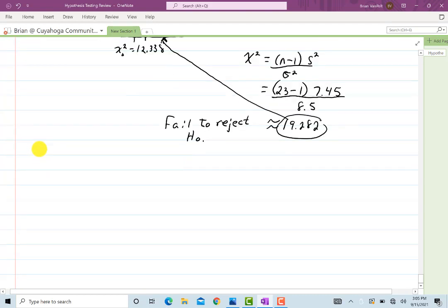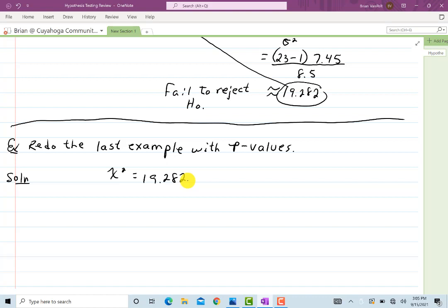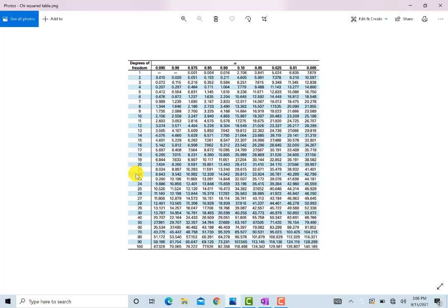Now let's redo the same problem, but with P values. Now if you recall, for those things, we calculate the chi squared first. And we also make sure that we note that it's a left-tailed test. So what we do then is we see chi squared equals 19.282. Now I know that my degrees of freedom was 23 minus 1, which equals 22. So let me go to that table and look for row 22, and then try to find this number in that row. Row 22, now I need 19.28.